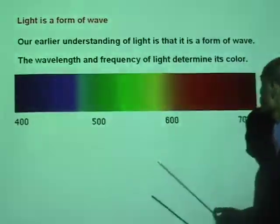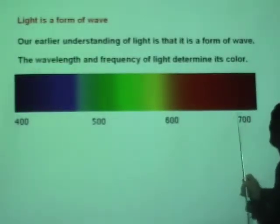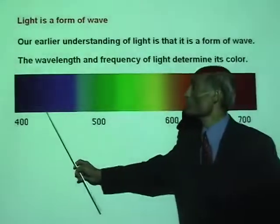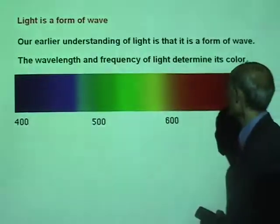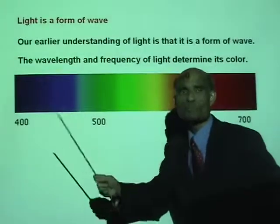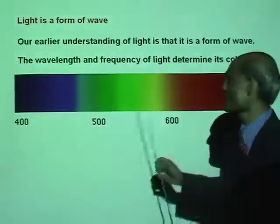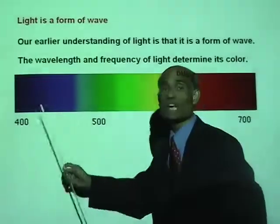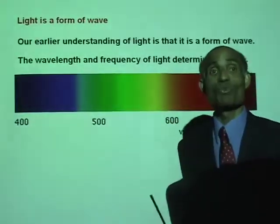Here again I have a picture of those colors — the wavelength from 700 nanometers to 400 nanometers. This is called the spectrum of visible light, and this actually contains 3,000 different wavelengths.